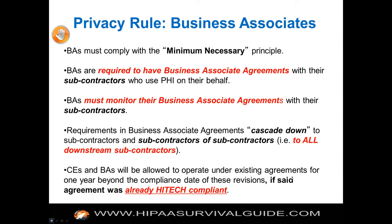Covered entities and BAs were allowed to operate under existing agreements for one year, but that one year has expired — it expired in September 2014. If you didn't update your business associate agreement as per the omnibus rule, and you had a HITECH-ready business associate agreement, you were grandfathered in for a year. Now you must have an omnibus rule-ready BAA, and you should have had it since September.